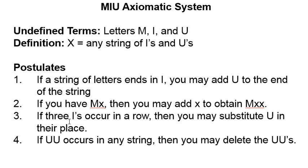MIU is a simplified version of Euclid's system. There are three undefined terms: M, I, and U. There's only one definition, and that's X. X is any string of I's and U's. So for example, the letter I is just a string — it could be a single letter. IU is another string. IIU is another string. So X is any combination of I's and U's that follow the M. Then MIU consists of four postulates.